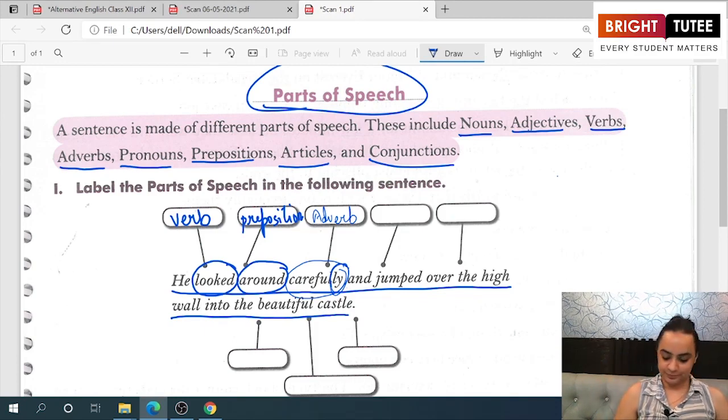'And' is joining the sentences. It is adding on a new sentence to it. So this is a conjunction. Conjunctions are the joining words.